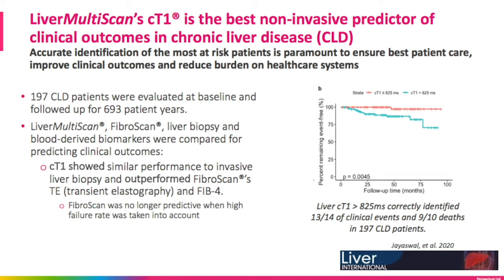This study shows that cT1, or fibroinflammation, is the best non-invasive predictor of clinical outcomes in chronic liver disease. Our fibroinflammatory marker actually predicts liver-related clinical outcomes in a similar way as fibrosis does in liver biopsy, and better than biomarkers of liver fibrosis such as FibroScan or the FIB-4 blood score. Improving clinical outcomes ensures best patient care and reduces the burden on healthcare systems.